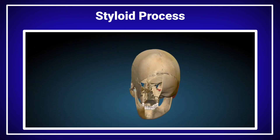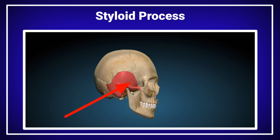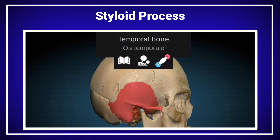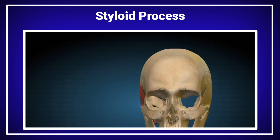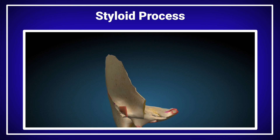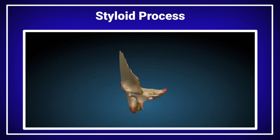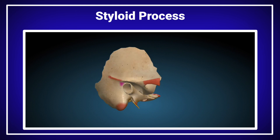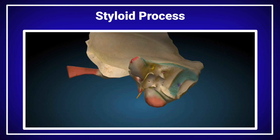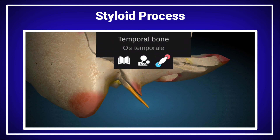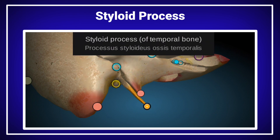The styloid process is also an example of the sharp elevation. It is present on the temporal bone of the skull. The temporal bone is present on the lateral side of the human skull. There is a sharp elevation of the styloid process in the inferior lateral position of the temporal bone. The styloid process is a sharp elevation which can be seen on screen.